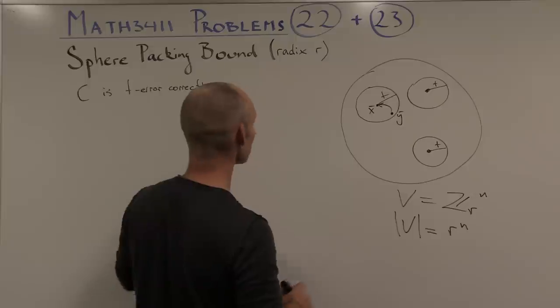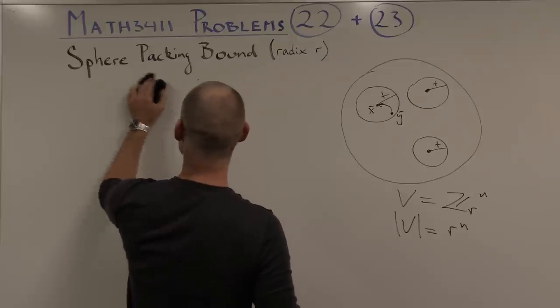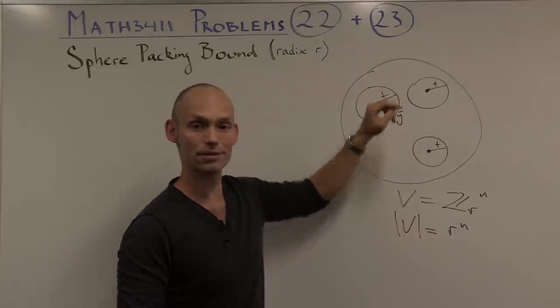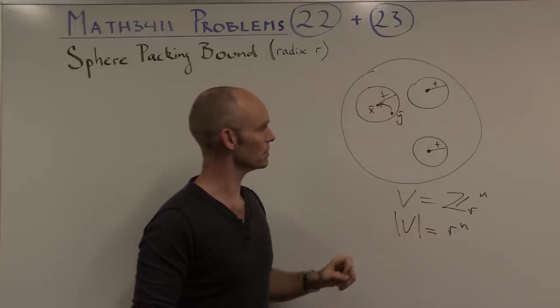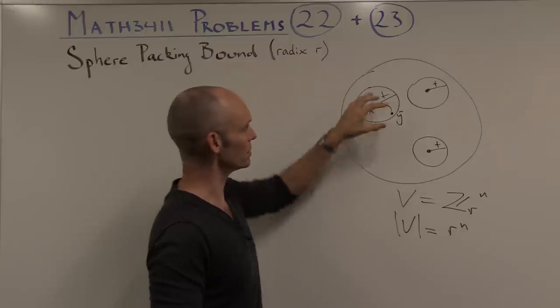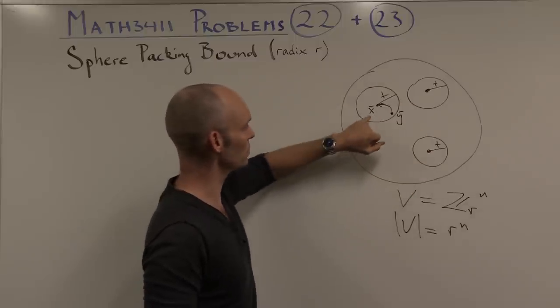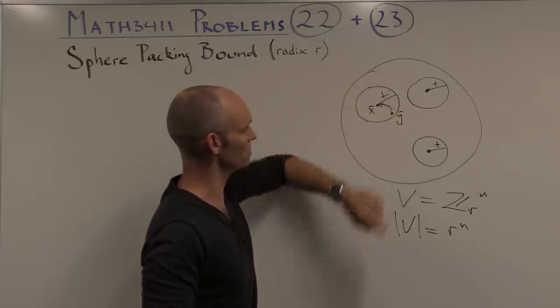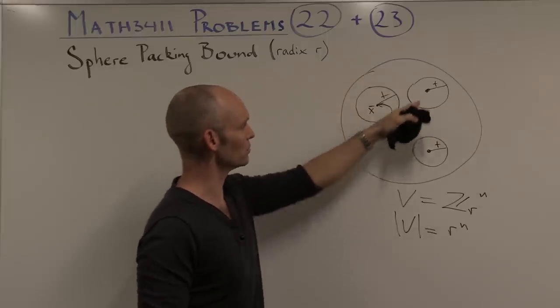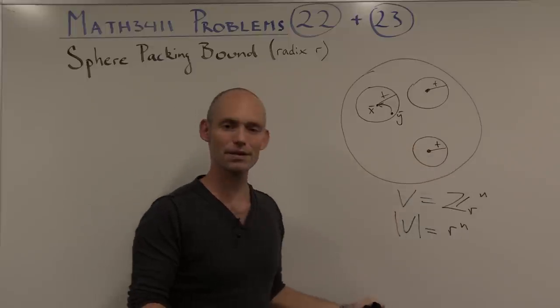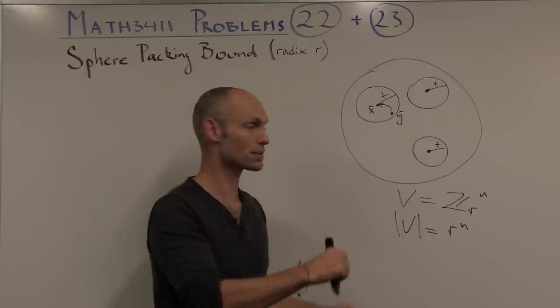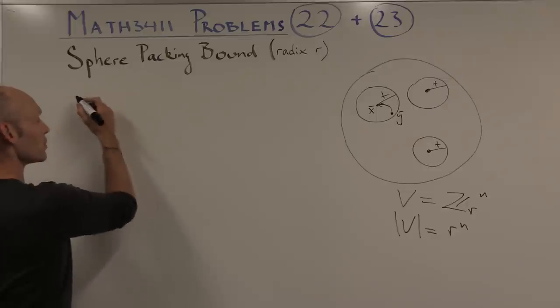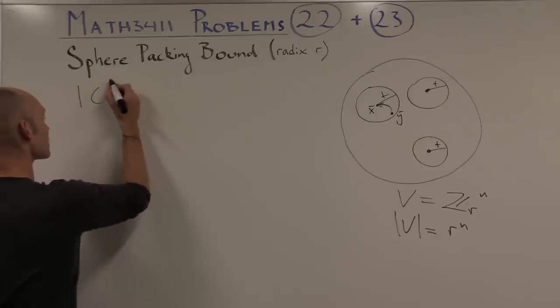The second part of the puzzle is to figure out how many words are contained in one of these spheres. Our first observation here is that the spheres have equal size. Around every single codeword, there are a constant number of words at distance at most t. Furthermore, the number of spheres is just the number of codewords.